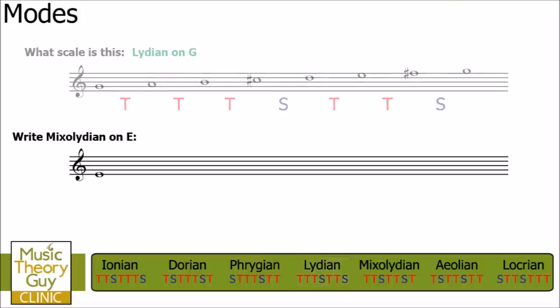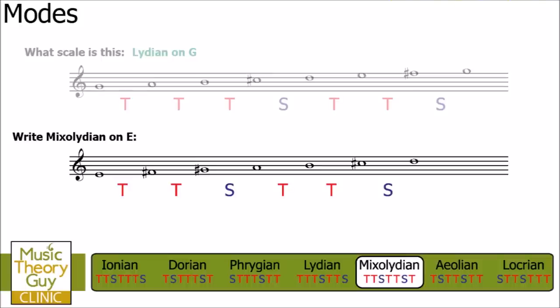Question two: write Mixolydian on E. We look at the Mixolydian pattern and follow it starting from E. A tone up takes us to F sharp, then a tone to G sharp. Note that A flat wouldn't be acceptable — scales must alternate line, space, line, space on the stave, and writing A flat would place two notes in spaces consecutively. Continuing: a semitone up to A, then a tone to B, a tone to C, a semitone to D, and finally a tone back to E. That gives us Mixolydian on E.